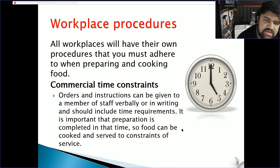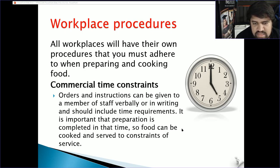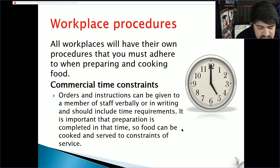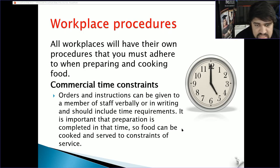Workplace procedures: all workplaces will have their own procedures that you must adhere to when preparing and cooking food. Commercial time constraints: orders and instructions can be given verbally or in writing and should include time requirements. It is important that preparation is completed in time so food can be cooked and served within service constraints. Most high-class restaurants will only create your item once you decide to purchase it, whereas fast food has already pre-prepared a lot of food and assembled it in the shortest time possible.